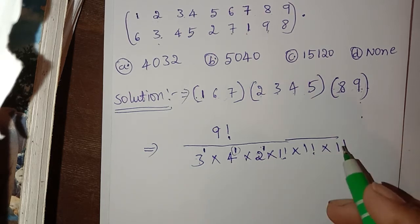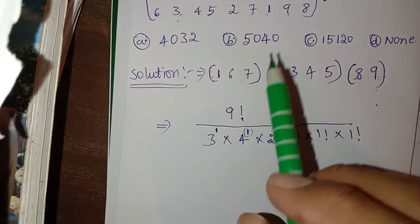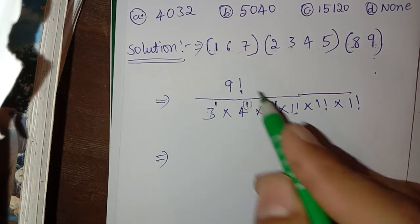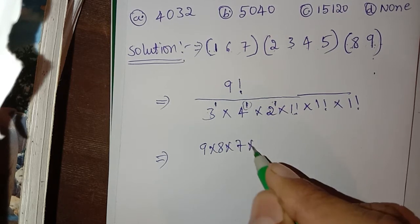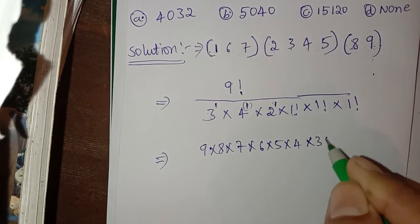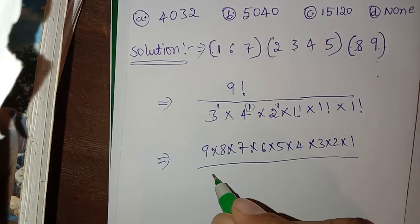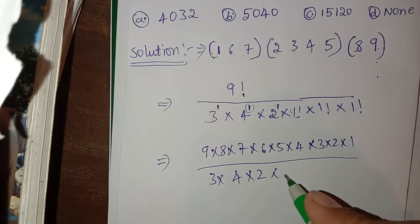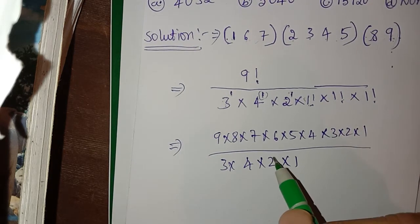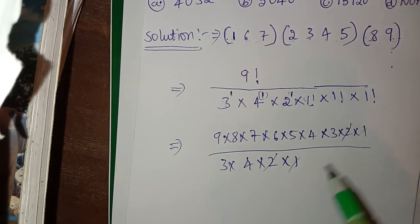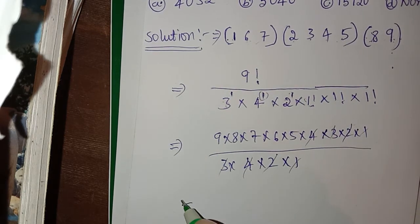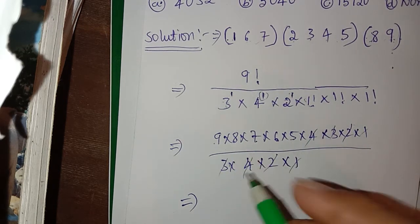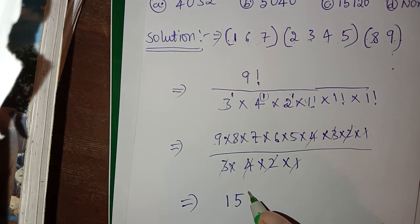So this is the required number of permutations conjugate to the given permutation. Nine factorial means 9 × 8 × 7 × 6 × 5 × 4 × 3 × 2 × 1, divided by three into four into two into one into one into one. One factorial means one, so we can cancel two with two, one with one, four with four, three with three.